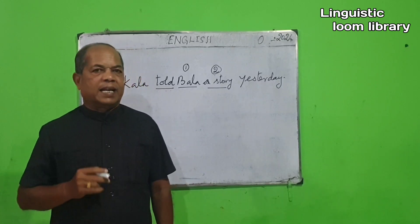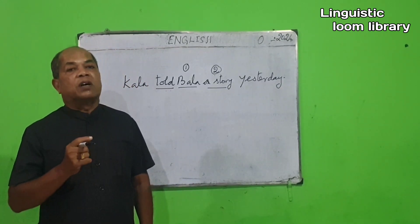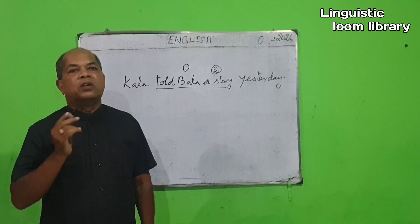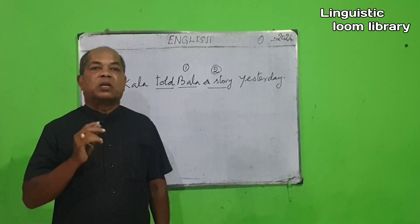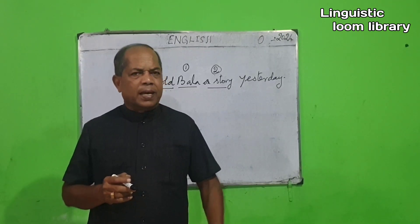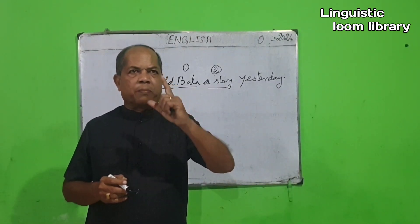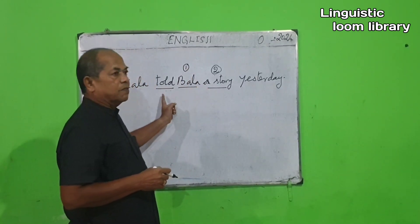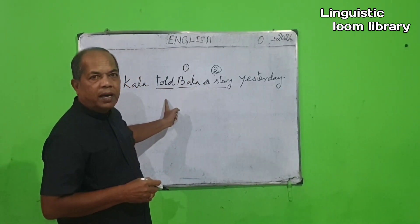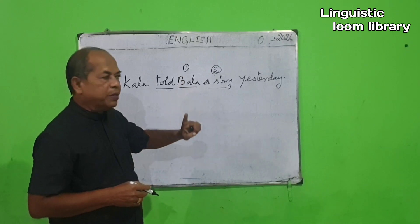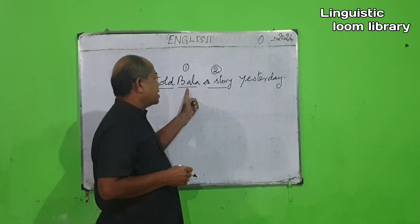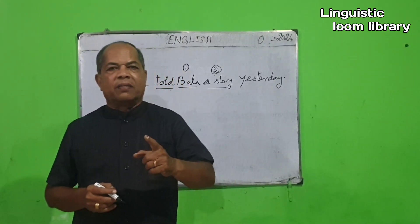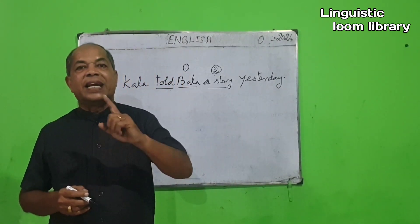Likewise, how will you find out the indirect object? Find out the finite verb in the given sentence. Among the question words — to whom, to which, to what — find out the suitable question word. The suitability should be made with the word that comes under number one after the verb. Using the question word and the verb, frame a question. The answer to that question is the indirect object.